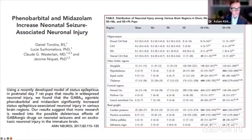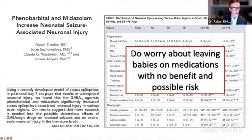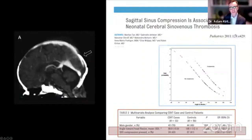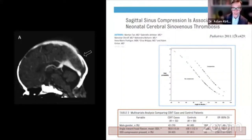One of my key take-home points today: you should seriously consider stopping all seizure medicine in babies with stroke before they go home. For babies with sinovenous thrombosis, a conservative measure is to avoid laying them flat on their back supine, as the superior sagittal sinus may be compressed by the occipital bone — simple nursing techniques to ensure good venous drainage.